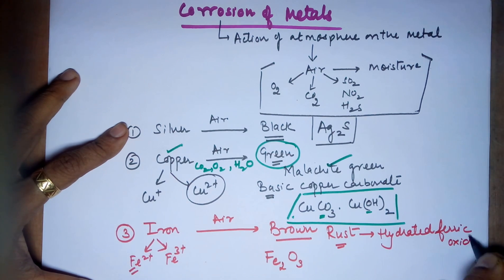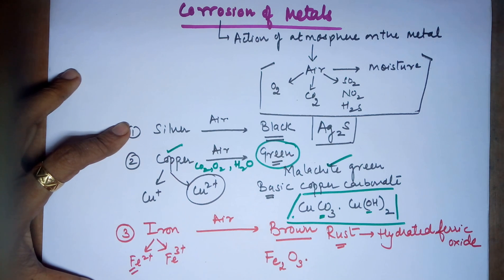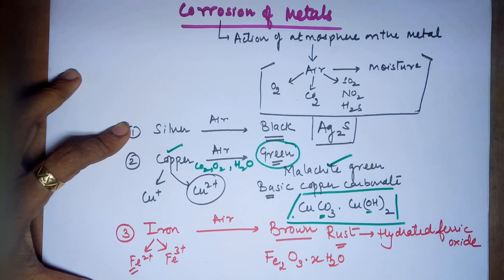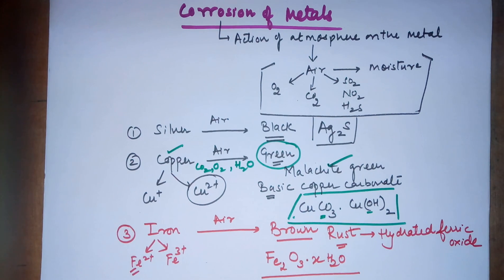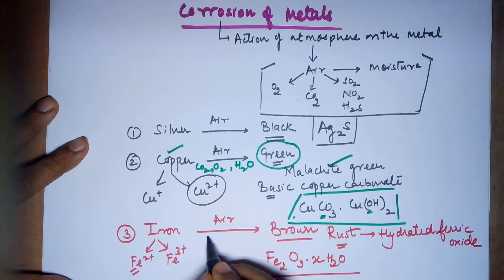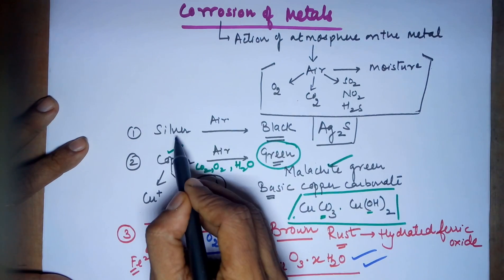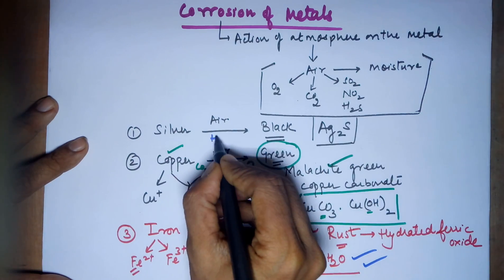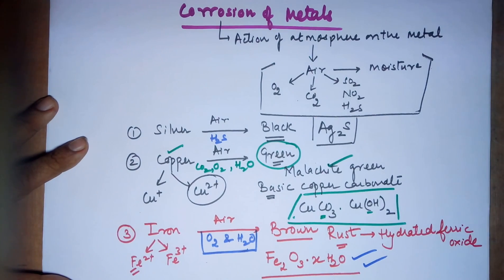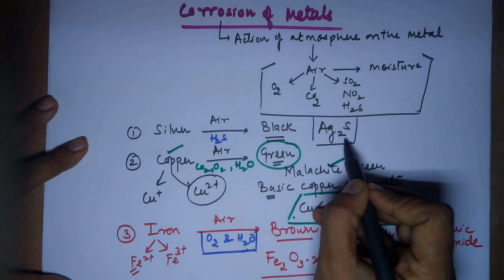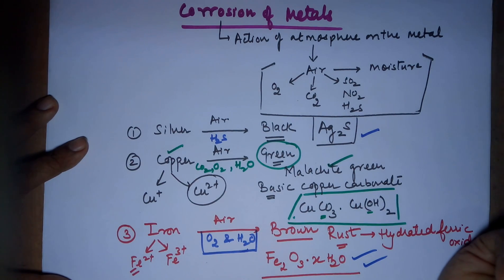Rust is more precisely called hydrated ferric oxide. It has some water molecules attached, but this is not a crystalline salt with a fixed number of water molecules — the water molecules are variable (denoted as x), so the formula is Fe₂O₃·xH₂O. The requirement from the air is oxygen and moisture both. In the case of silver, hydrogen sulfide gas from the air is required, which leads to the formation of silver sulfide, which is black.